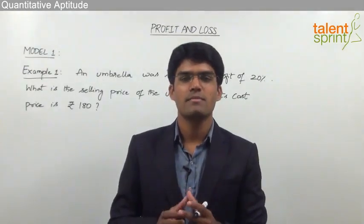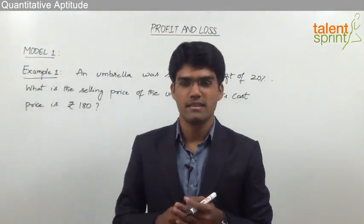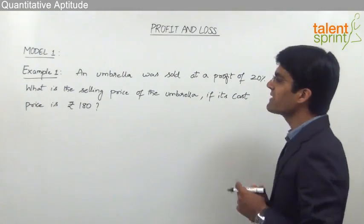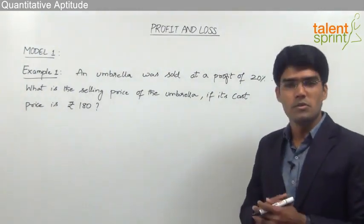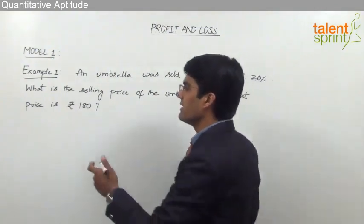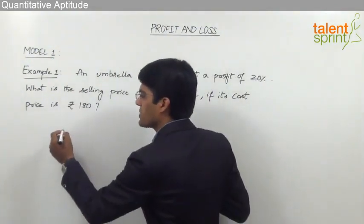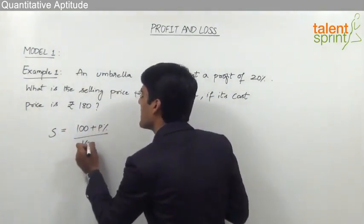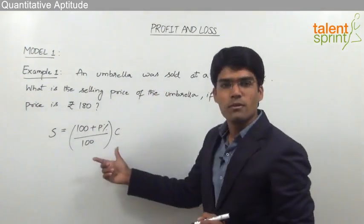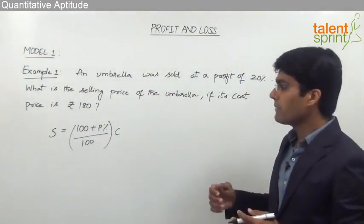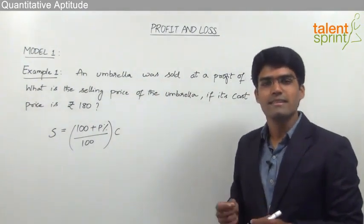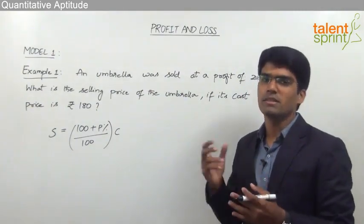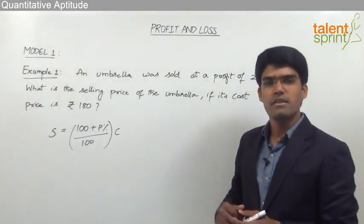Let us now take an example on Model 1. An umbrella was sold at a profit of 20%. What is the selling price of the umbrella if its cost price is rupees 180? To solve this, we can use the formula: selling price = (100 + profit%) / 100 × cost price. Alternatively, we can use the concept of percentages. Let us try to solve this question in both ways, and you can follow whichever is convenient for you.